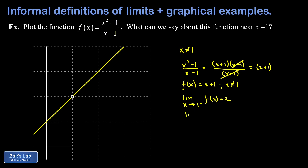Similarly, the limit as x goes to 1 from the right — meaning x is slightly bigger than 1 — also gives f(x) very close to 2. There are no unusual jumps, so we get the same y-value approaching from the right. Because the left and right limits agree, we can talk about the ordinary limit: the limit as x goes to 1 of f(x) equals 2, no matter which direction we approach.